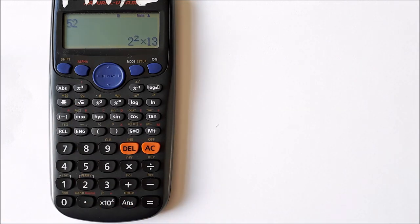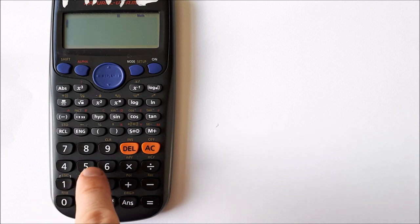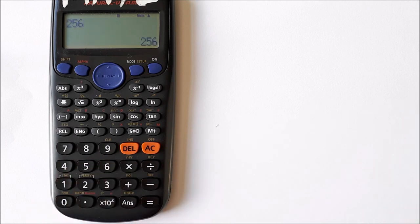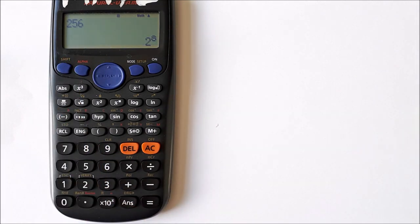52 is 2 squared times 13—that's 2 times 2 times 13. One more: 256. Equals, shift, fact. You can see that 256 is 2 to the power of 8.